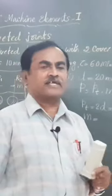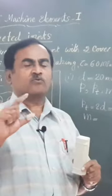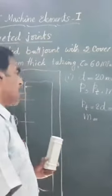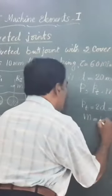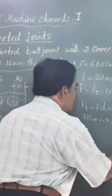It's always 1.5d, whatever may be the type of joint, whatever may be the arrangement of rivets, or the number of rows of rivets arranged. It is always 1.5 times d, that is, 1.5 times the diameter of the rivet.